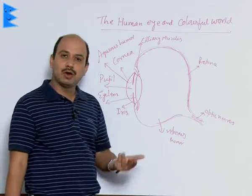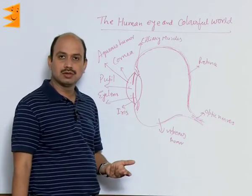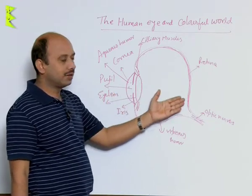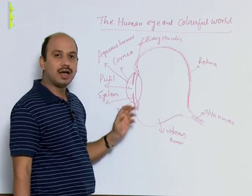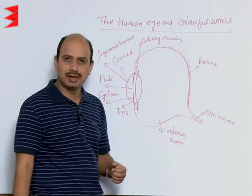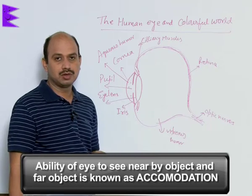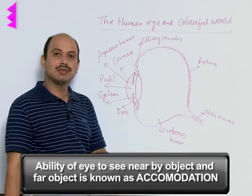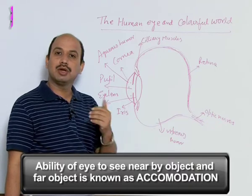Whether we see a nearby object or a far-off object, the image can be formed on the retina with the help of the ciliary muscles and lens — that is, by adjusting the focal length of the lens. This ability of the eye to see both nearby and far-off objects is known as accommodation.